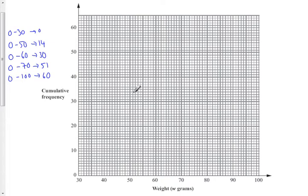I'm going to plot these on our graph. So we take the upper values. So at 30, that's our first one, we're going to plot 0. At 50, we're going to plot 14. So at 50, we've got 10, 11, 12, 13, 14. At 60, we're going to plot 30. At 60, we're going to plot 30. And you've got to be really accurate with this.